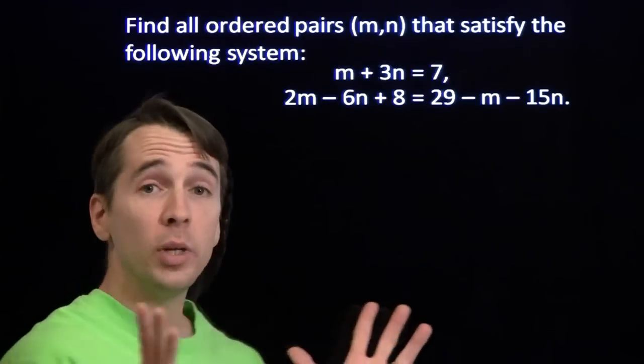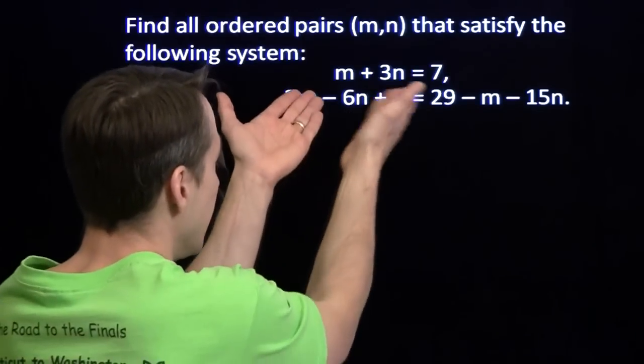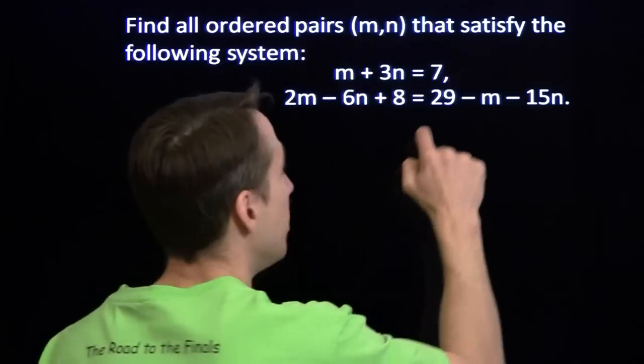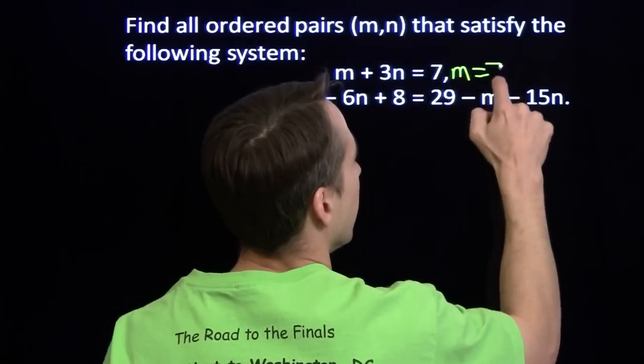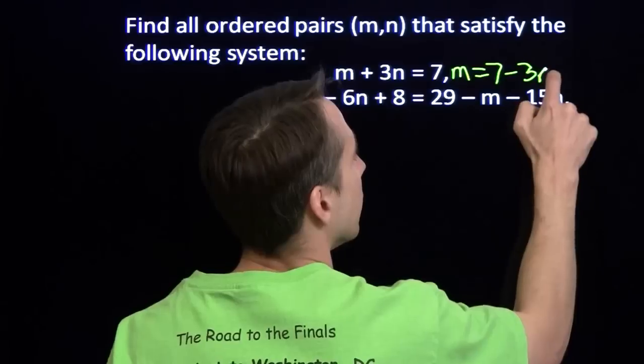We've got a system of equations here. We know how to handle this. It's easy to solve this first equation for m in terms of n, so we'll try a little substitution here. Subtract 3n from both sides, and there we go.